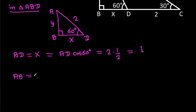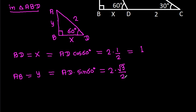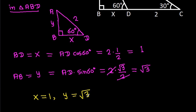And AB (y) = AD·sin 60° = 2 times √3/2. The 2s cancel, giving y = √3. So we get x = 1 and y = √3.